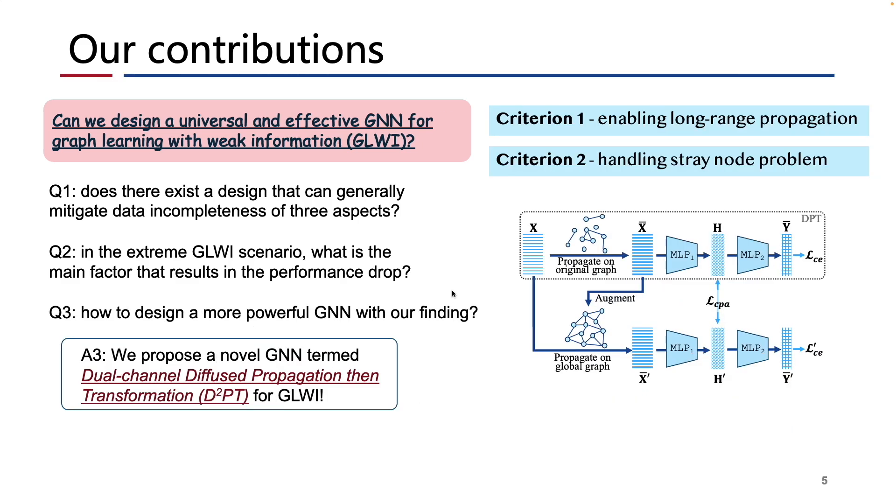Finally, following the criteria of long-range propagation and handling the stray node problem, we propose a novel GNN termed Dual-Channel Diffused Propagation then Transformation, or D²PT for short, for the GLWI problem. Our experiments show that our proposed method significantly outperforms existing baselines in various GLWI scenarios. For more details, please check out our paper.